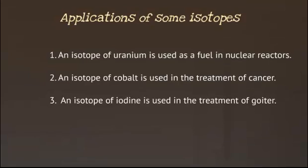Let us look at the applications of some isotopes. An isotope of uranium is used as a fuel in nuclear reactors. And an isotope of cobalt is used in treatment of cancer. Also, an isotope of iodine is used in the treatment of goiter.